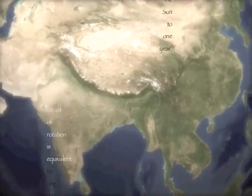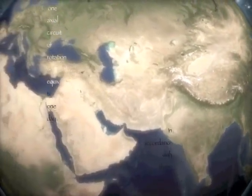Relatively speaking, Master Han equates the orbital circuit of the Earth around the Sun to one year, while one axial circuit is equivalent to one day.